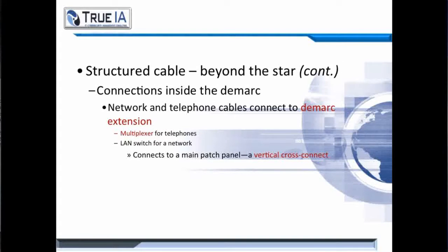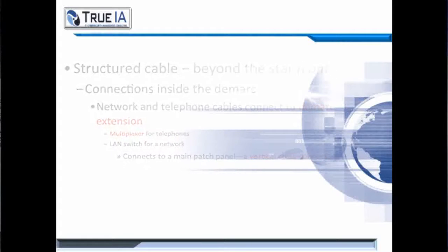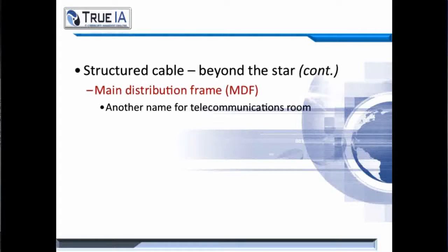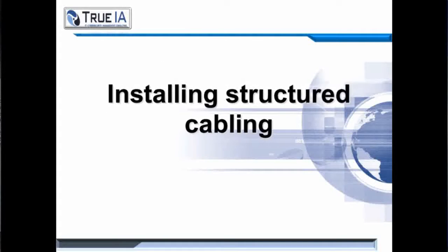Your connections are at the DMARC extension. This extension is what connects to the main patch panel, called a vertical cross connect. From that vertical cross connect, you'll run to the MDF, or the main distribution frame — just another name for the telecommunications room. Now that you understand the basics of structured cabling, let's take a look at how to install it.